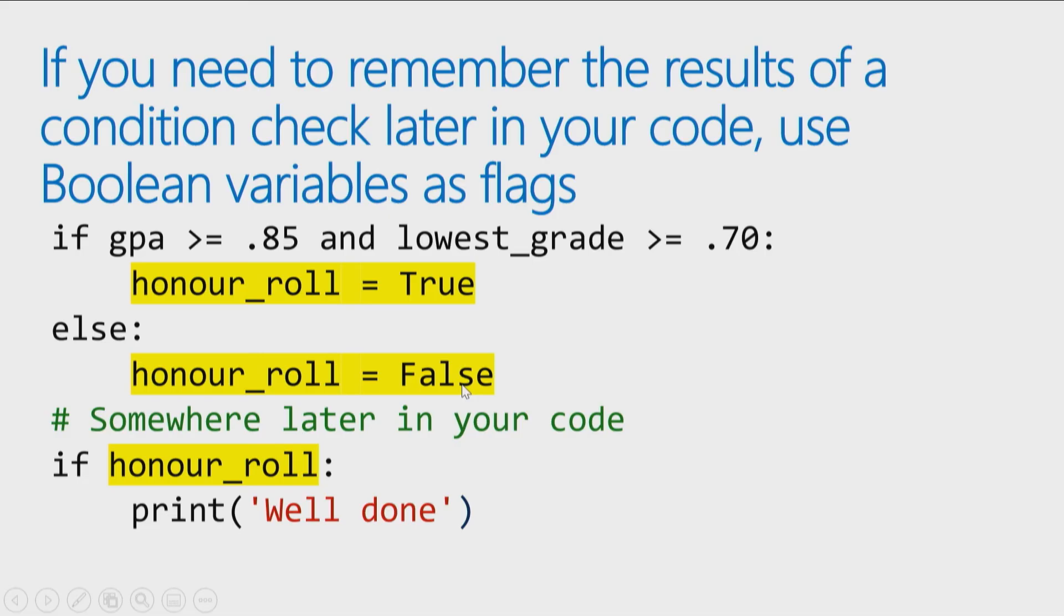Then you can have all kinds of code executing, and somewhere later in your code when you need to say, oh, that's right, if they're on the honor roll, I need to send them their congratulatory letter. Then I just say, if honor_roll, print well done, or print them their congratulatory letter. So I don't have to rewrite all that complicated logic.